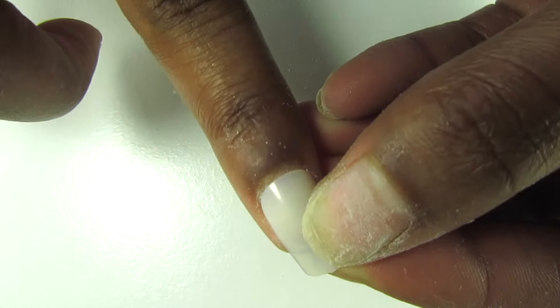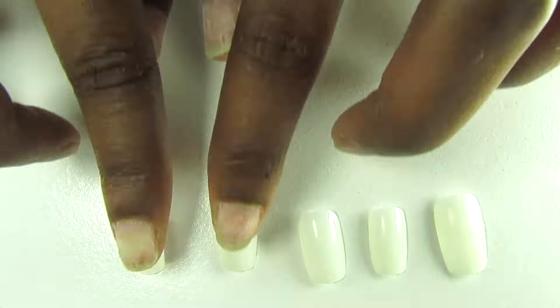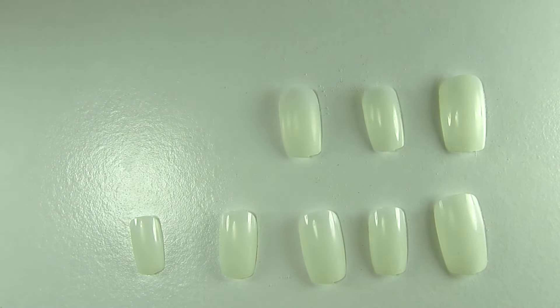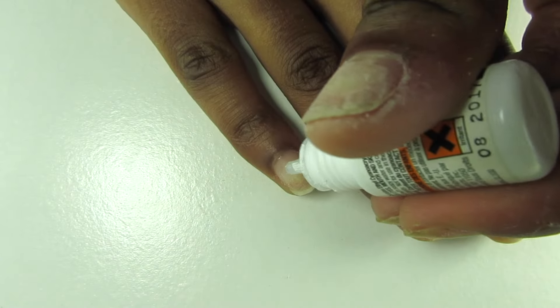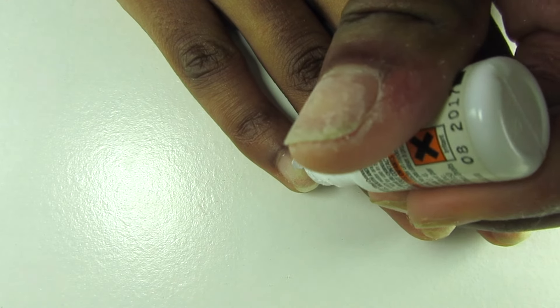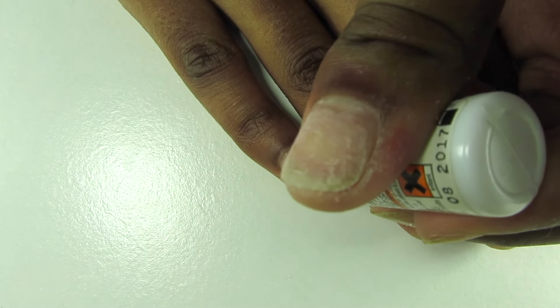Here I'm filing it. After you've selected all the sizes you just want to line them up in order and keep them to the side so you can have easy access. Now you want to apply just a drop of nail glue on your nail bed.